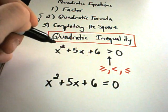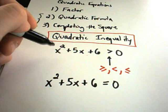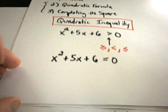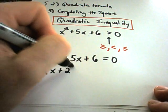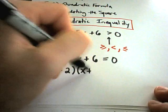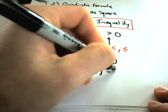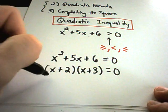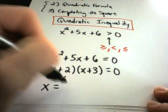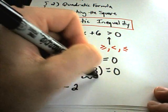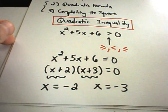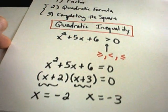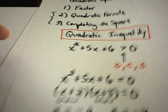Probably the best way to solve this quadratic equation, at least if it works out, is to factor it. I can factor x² + 5x + 6 as (x + 2)(x + 3) = 0. Solving each factor set equal to zero gives x = -2 and x = -3.